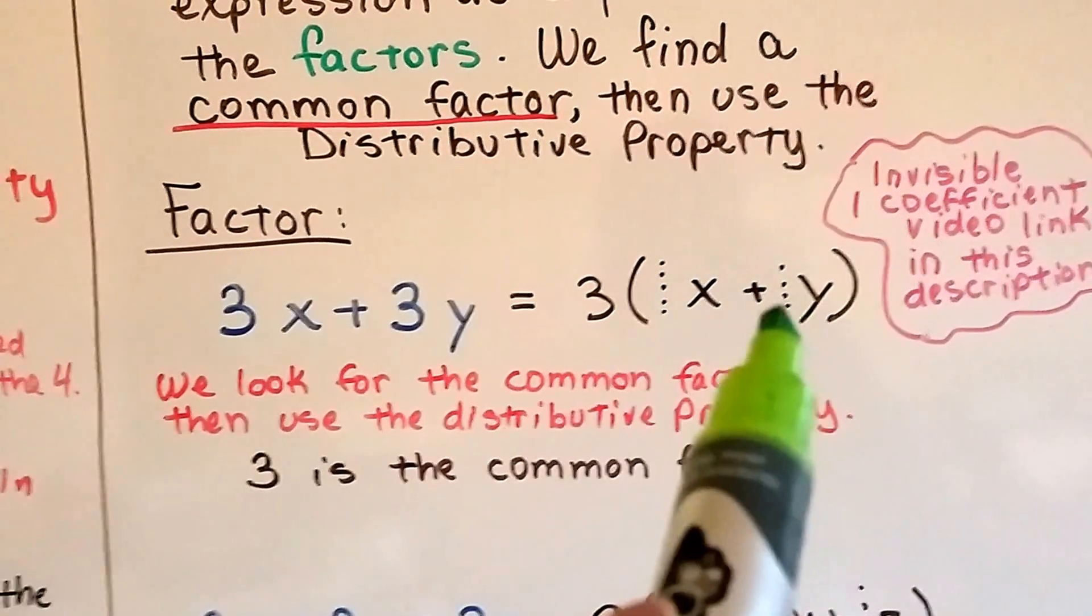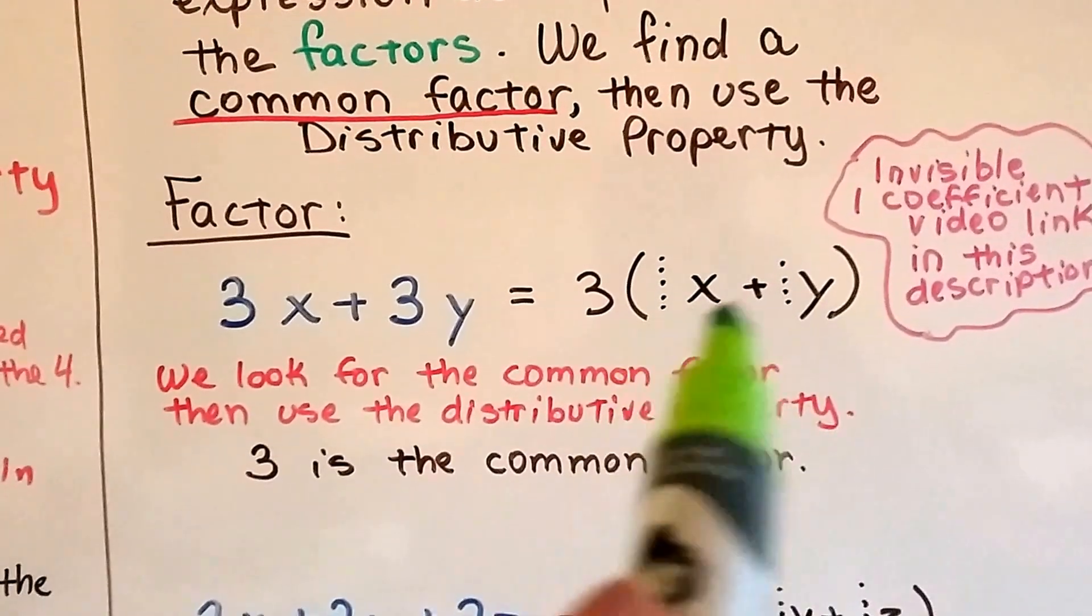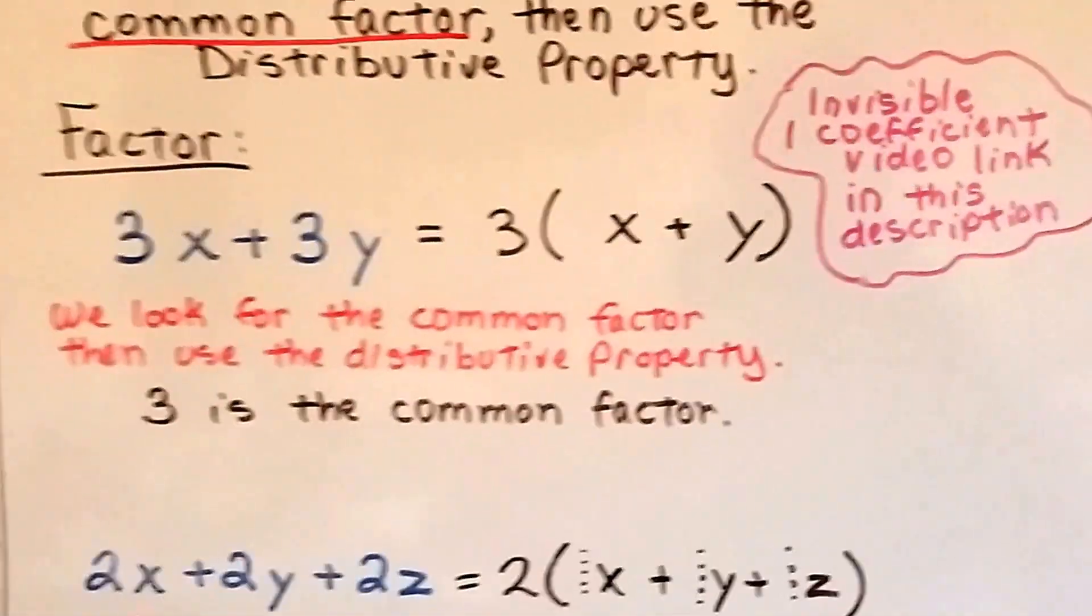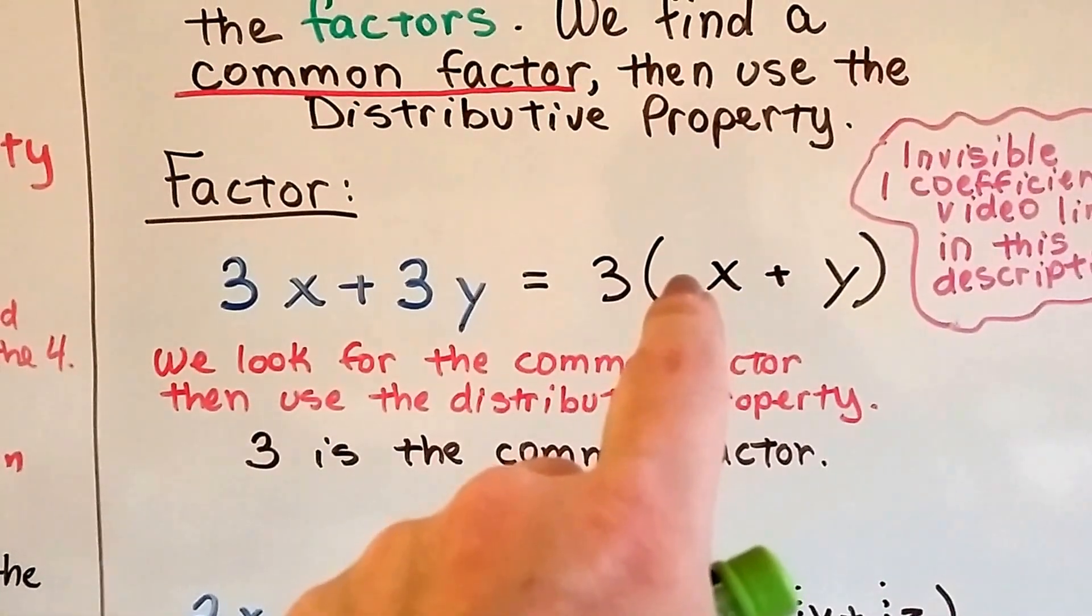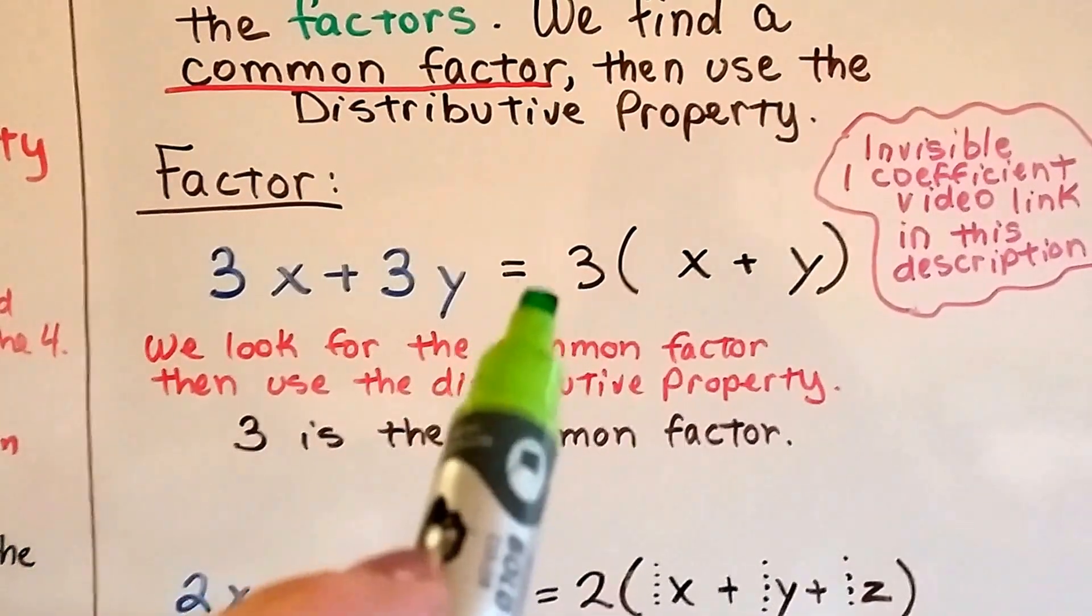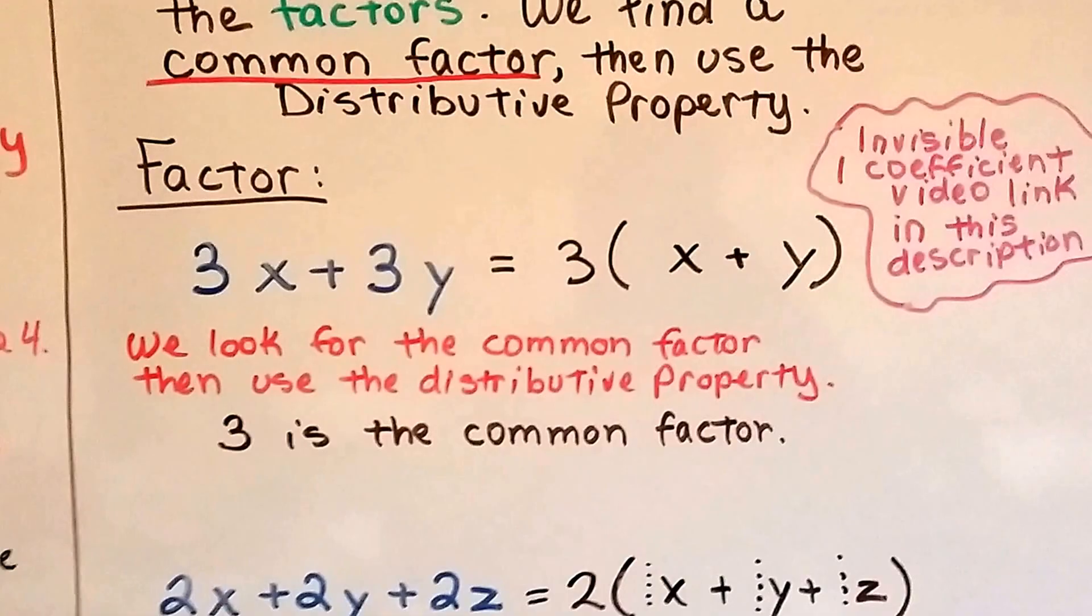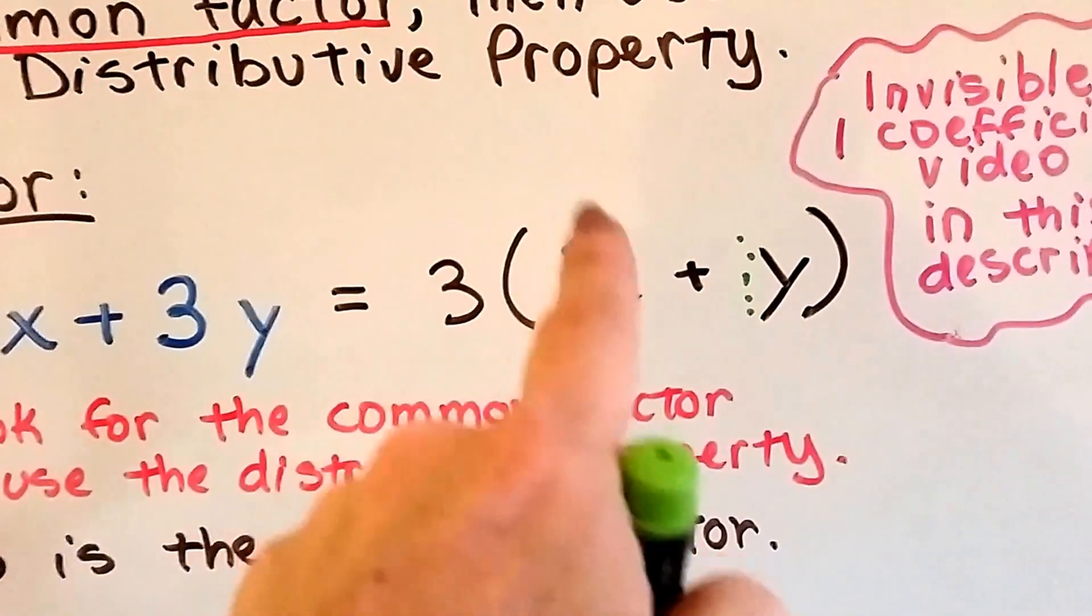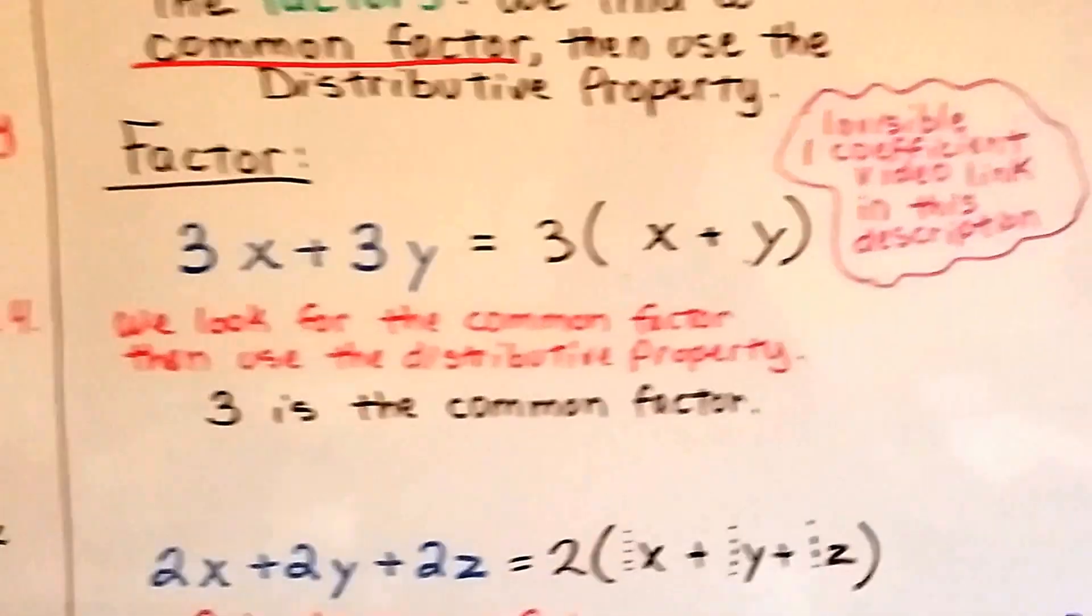Because there's an invisible 1 in front of every lonely variable. If there's no coefficient in front of a variable, if you just see an a or a b or an x or an m or a p or a q or whatever that variable is, if it's just by itself with no number in front of it, no coefficient in front of it, there's an invisible 1 there. So what we do is, to check to make sure we did this right, we try multiplying it. 3 times x is 3x, and 3 times y is 3y. So that little invisible 1 helps us, because 3 times 1x is 3x. If you don't know about that video, really, really watch it. It's really important.